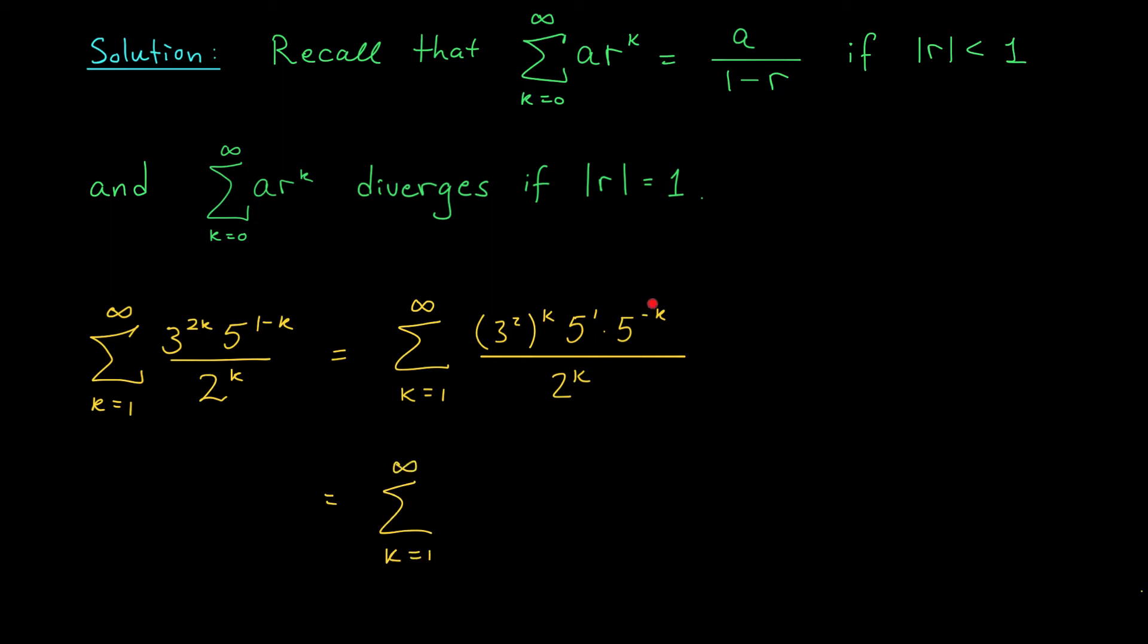How can we simplify this expression? Well, let's see. I could pull that 5 term out front. I'd have 5 times 9 to the k, and then I'm going to move this 5 to the minus k term to the denominator. That's going to give me 2 to the k times 5 to the k.